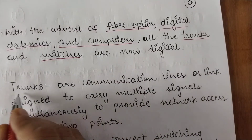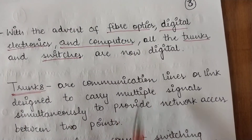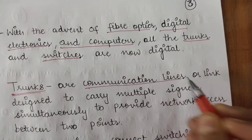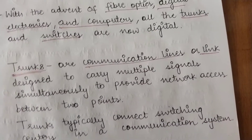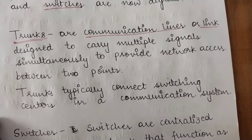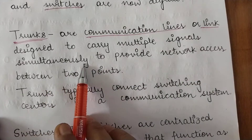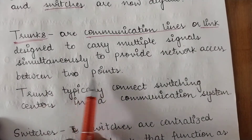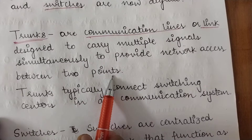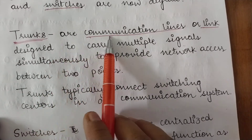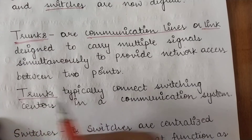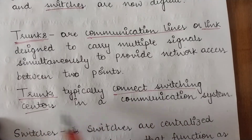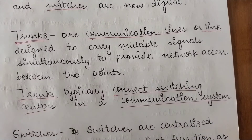Trunks are your communication lines — links basically designed to carry multiple signals simultaneously, meaning they can carry multiple signals at the same time to provide network access between two points. Trunks typically connect switching centers in a communication system; the job of trunks is to connect switching systems.